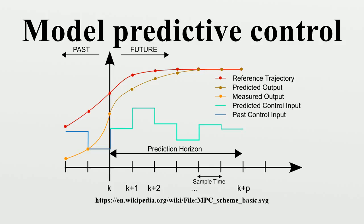Only the first step of the control strategy is implemented. Then the plant state is sampled again and the calculations are repeated starting from the new current state, yielding a new control and new predicted state path.